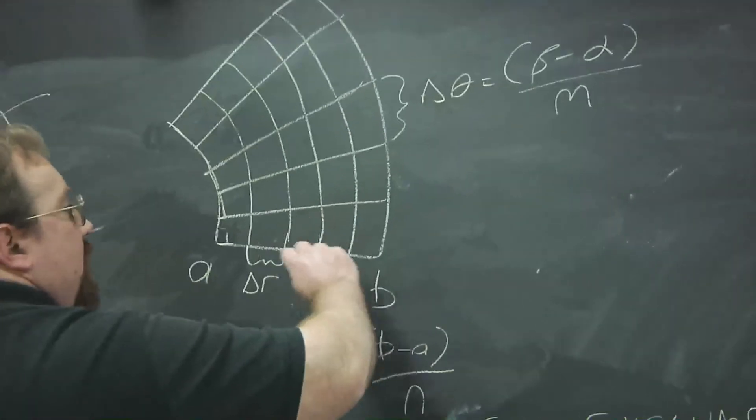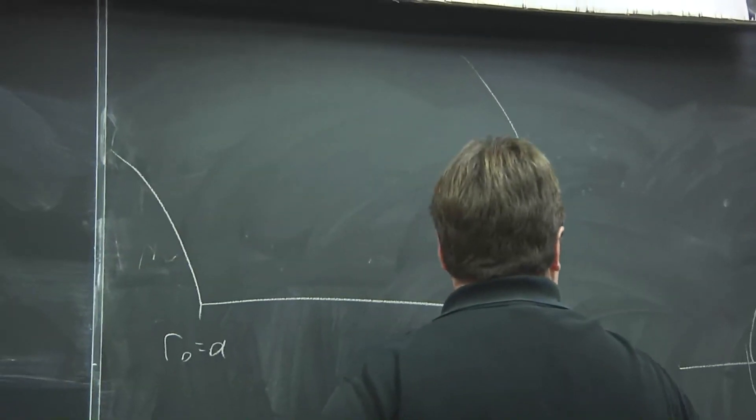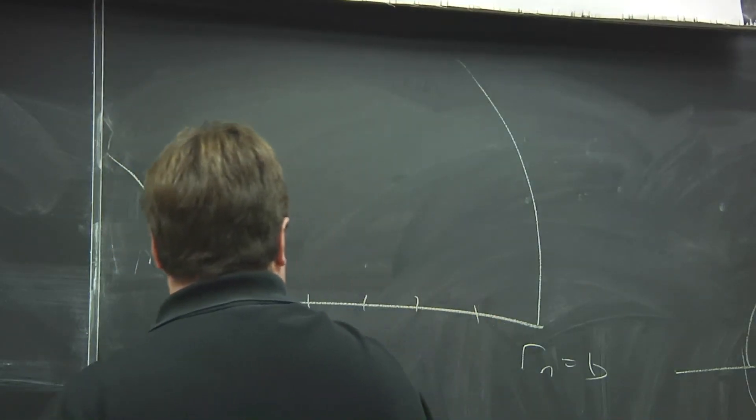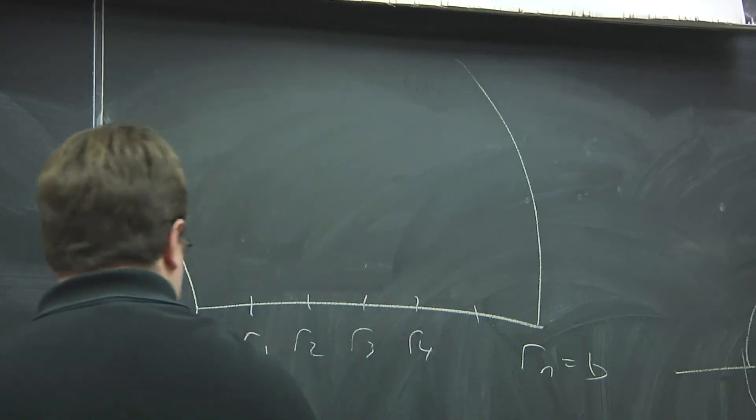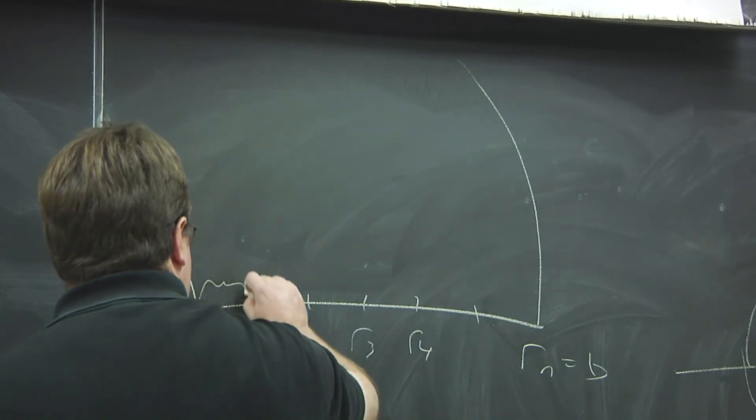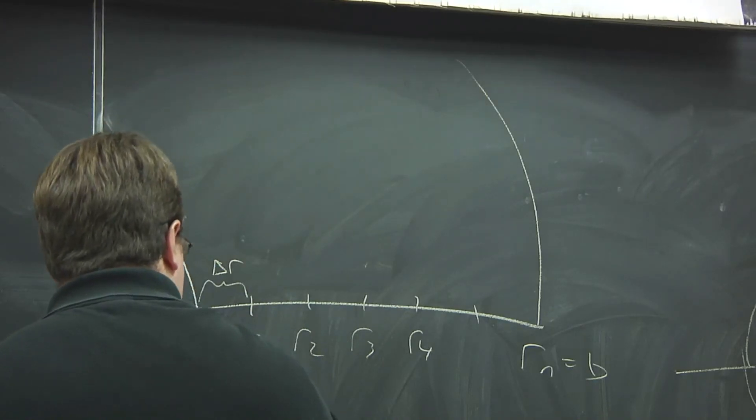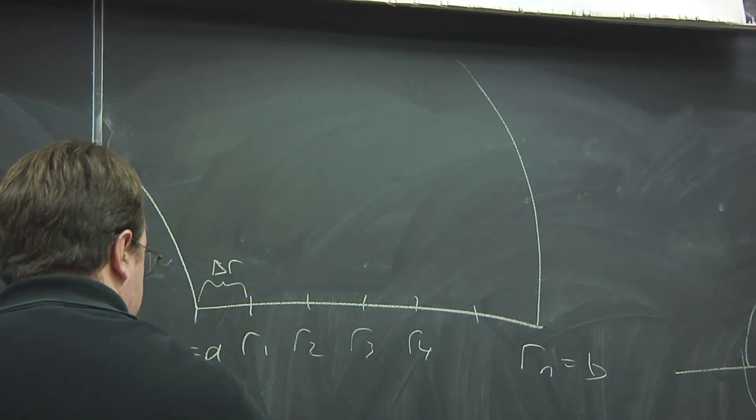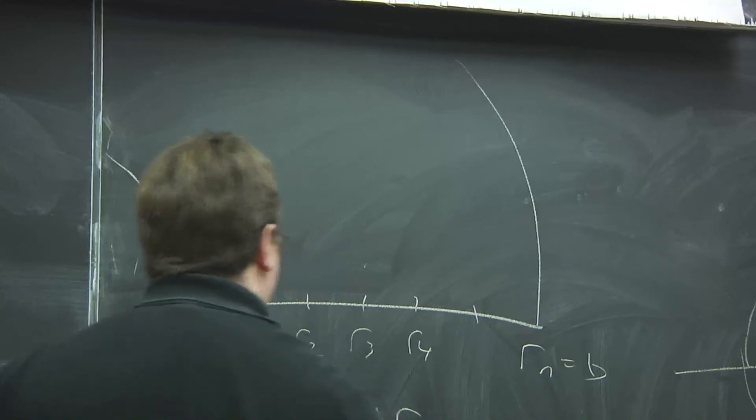So let me zoom in on this a little further. r_n is equal to b, and I'm dividing this with r_1, r_2, r_3, r_4. So we have the spacing between each of these is delta r. So here we have several radii between a and b, and each one is equal to a plus i times delta r.